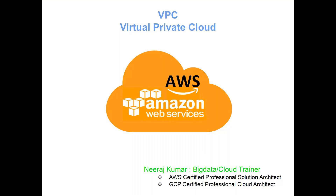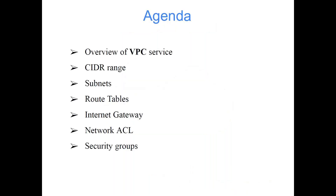Welcome to the AWS Data Engineers Training Program. Today's topic is VPC, which stands for Virtual Private Cloud. VPC is a technical term provided by AWS — in simple words, you can call it the networking part, because when you have multiple servers and different services interacting with each other, networking is required. The agenda covers: overview of VPC, CIDR range, subnets, route tables, internet gateway, network ACL, and security groups.